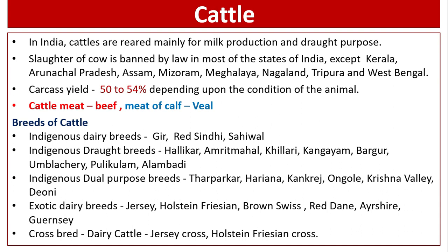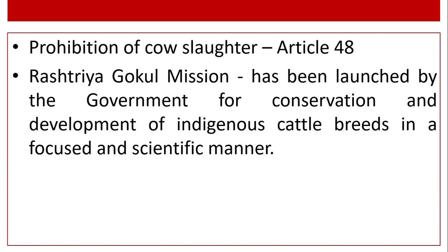Breeds of cattle: indigenous dairy breeds include Gir and Sindhi, Sahiwal; indigenous draught breeds and dual-purpose breeds are also there. Exotic dairy breeds and crossbred varieties like Jersey cross and Holstein Friesian cross are there. Prohibition of cow slaughter is mentioned in Article 48 under the Directive Principles of State Policy.